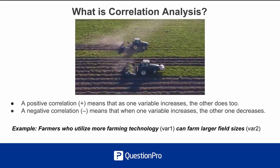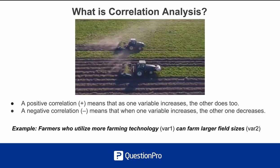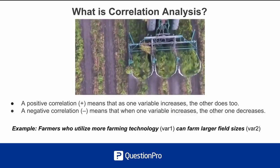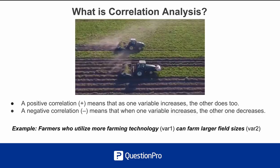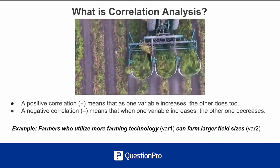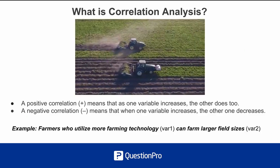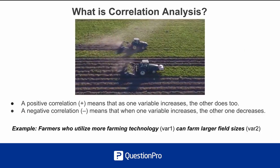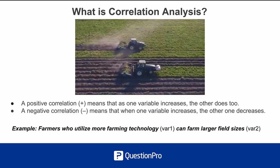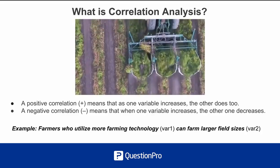A good example of a positive correlation is that farmers who utilize more farming technology, which is variable one, can farm larger sizes of fields. That would be considered a positive correlation.